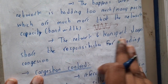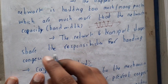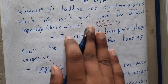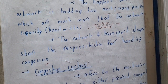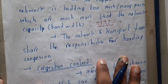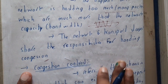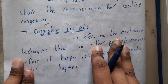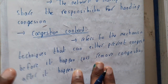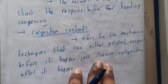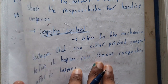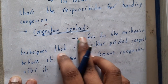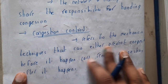The network and transport layer share the responsibility for congestion. It is not only the duty of the network layer — along with the transport layer, both combined will take care of this congestion. We'll be discussing congestion control for around five to six lectures.